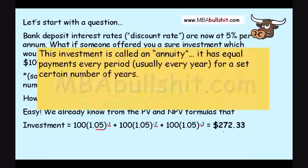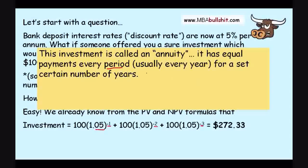So, this investment is called an annuity. It has equal payments every period, and that's usually every year, and it is set for a certain number of years or a certain number of periods. It is not forever.